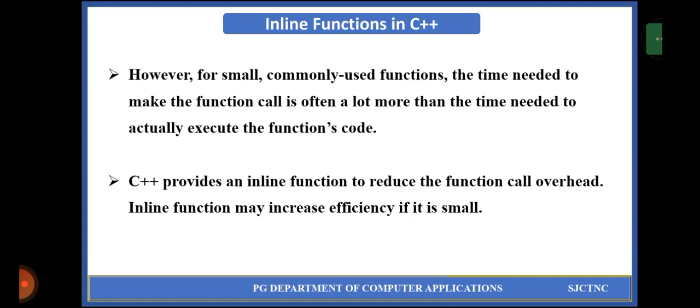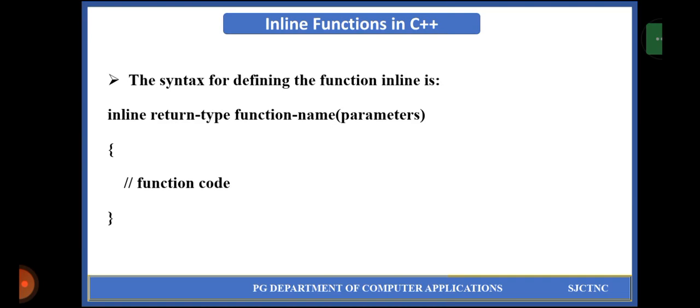However, for small commonly used functions, the time needed to make the function call is often a lot more than the time needed to actually execute the function code. C++ provides an inline function to reduce the function call overhead. Inline function may increase efficiency if it is small, so an inline function should be a smaller function. Here we can see the syntax for defining a function inline. We use the keyword inline before the return type, then the function name, then parameters, followed by the function body. An inline function should be declared with the keyword inline.